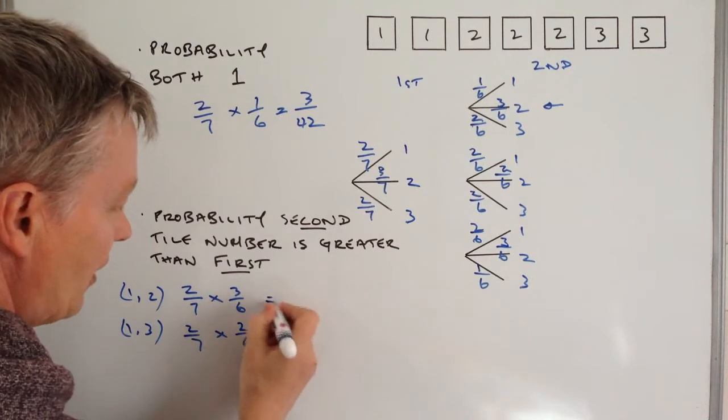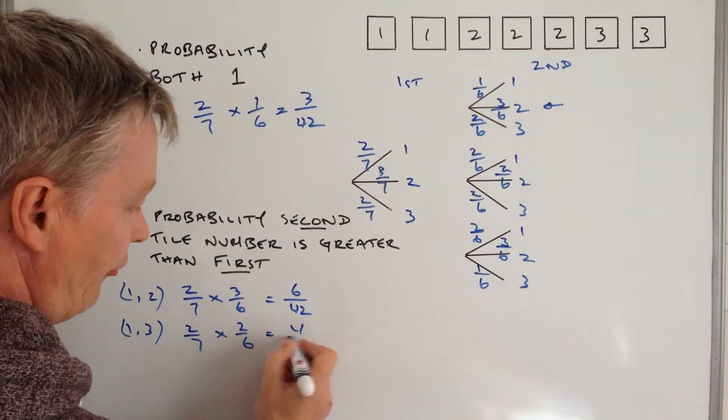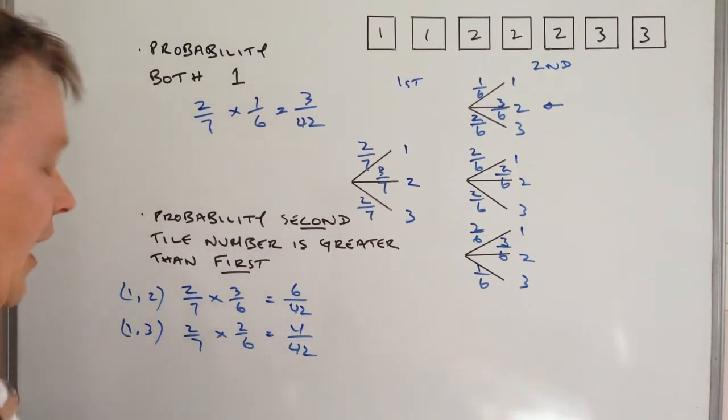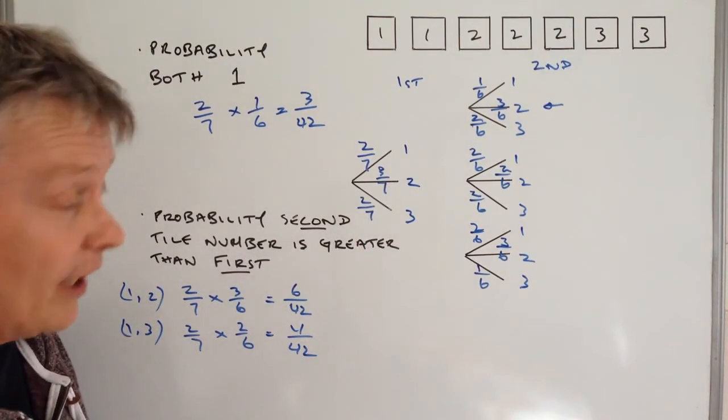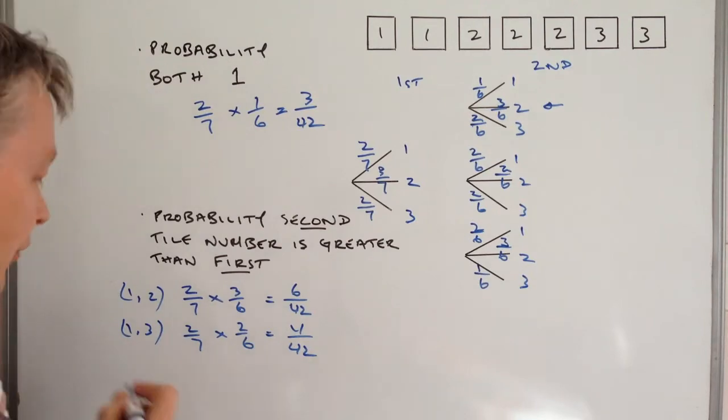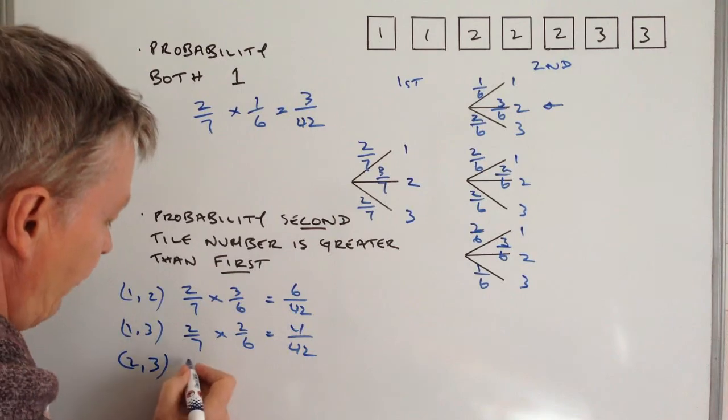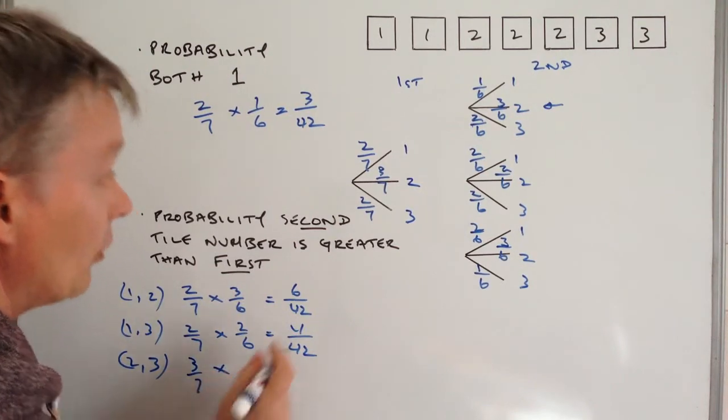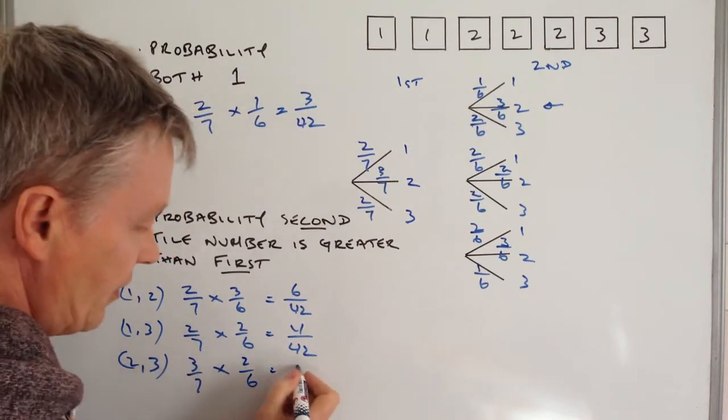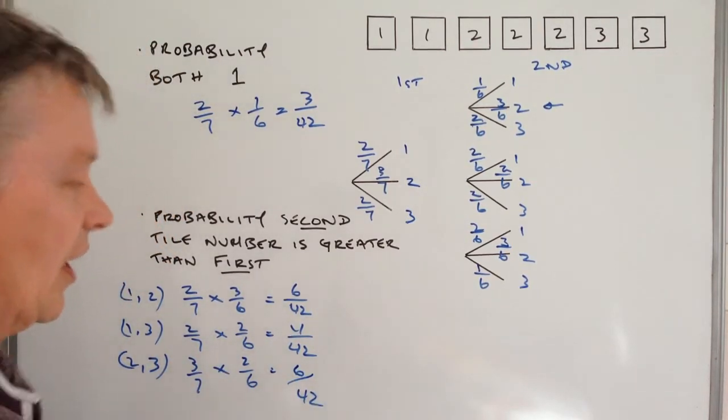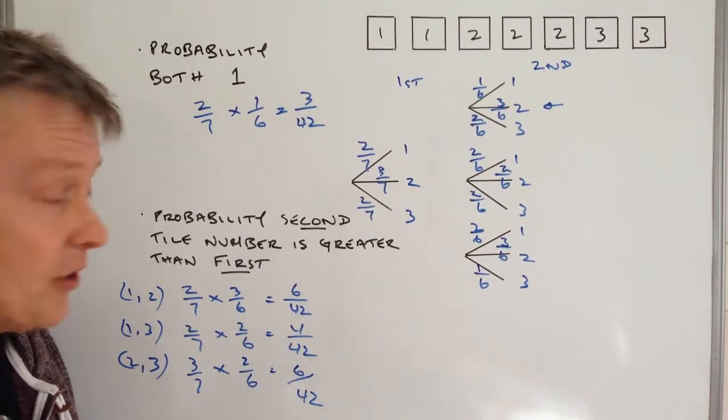Let's just calculate those. So that's 6/42 and that one is going to be 4/42. And then the final one I think is where he picks a two the first time round and then the second time round he picks a three. So the probability of a two and then a three is going to be 3/7 multiplied by 2/6, and that's going to be three times two is six, over 42. Those are the probabilities individually for each of those.